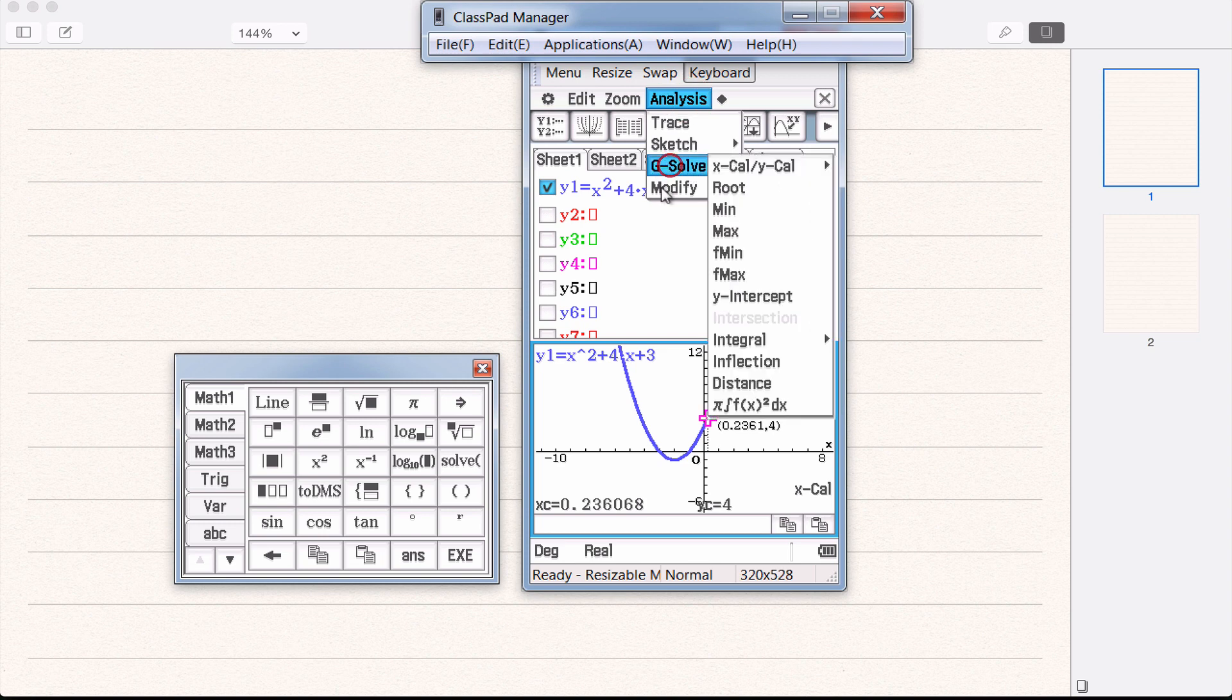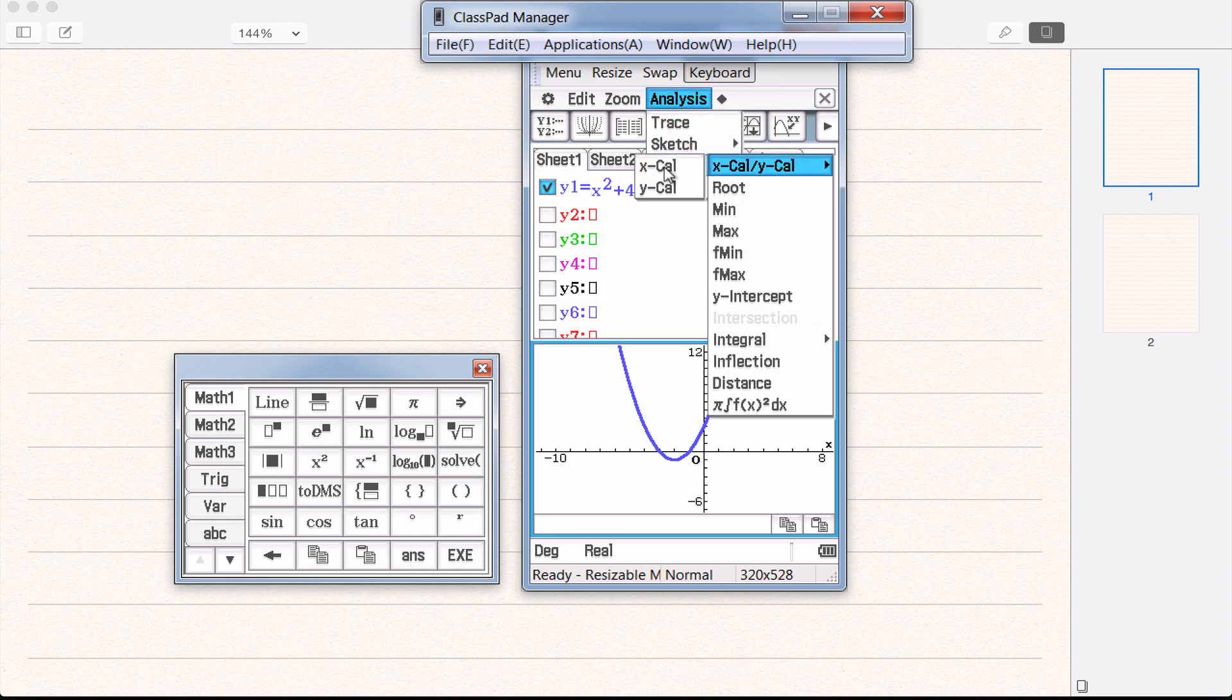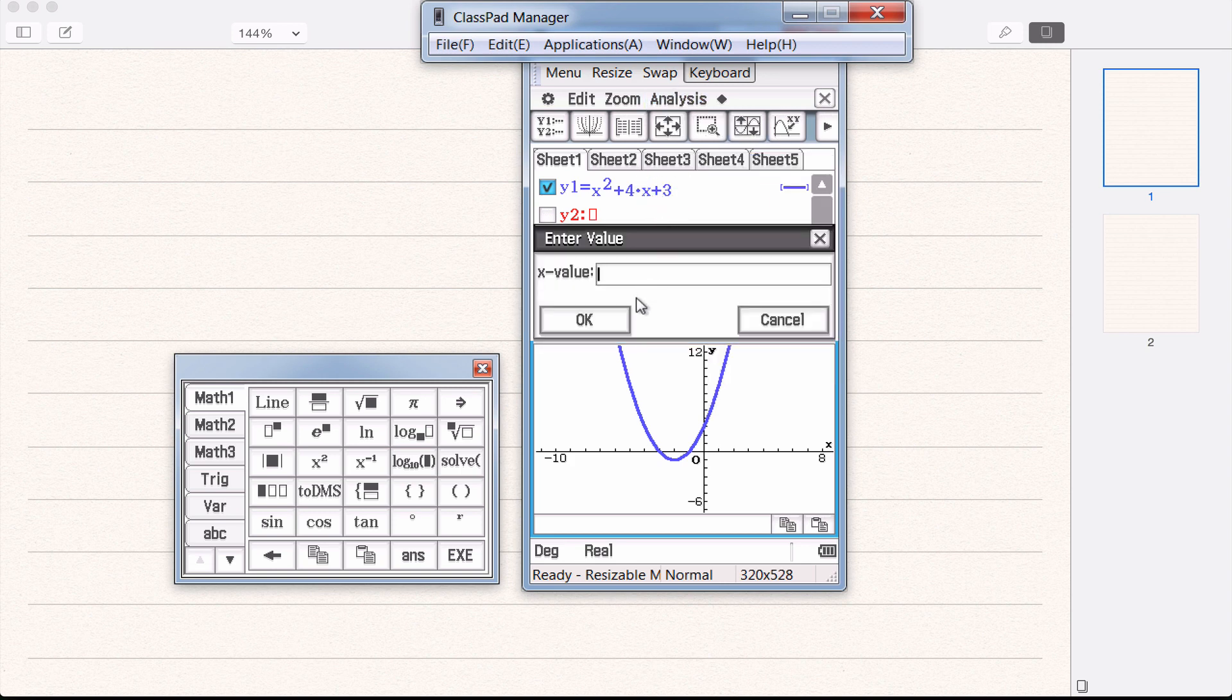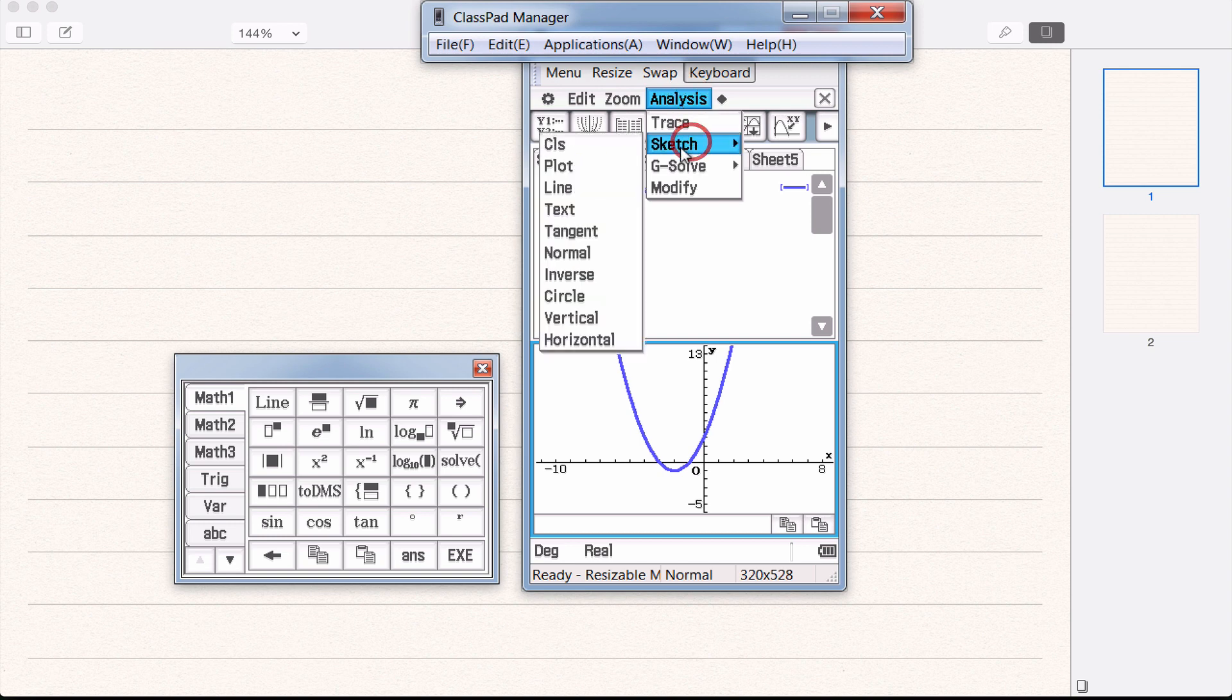You can also do the opposite. G-solve for the, calculate the y value for the x value of 2. And it shows you here, it's off my graph, which was a bad example to choose, but it's still giving you the answer, x equals 2, y equals 15. It's just a little bit up here.